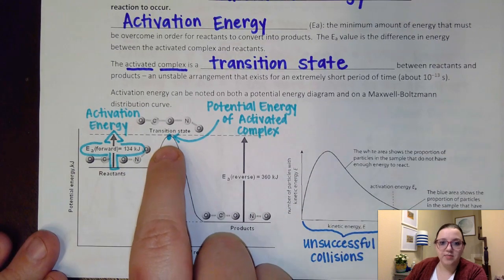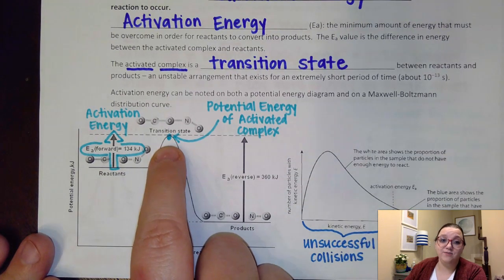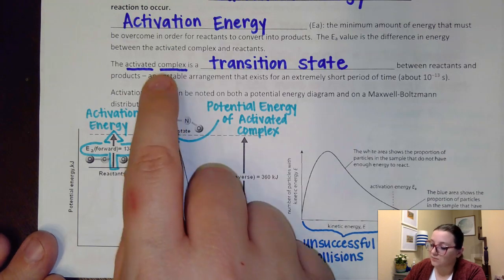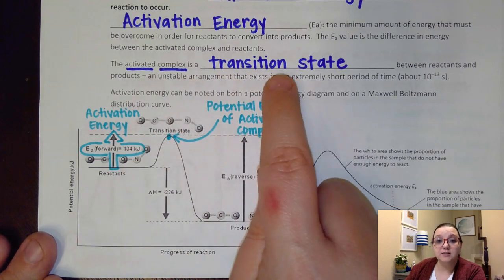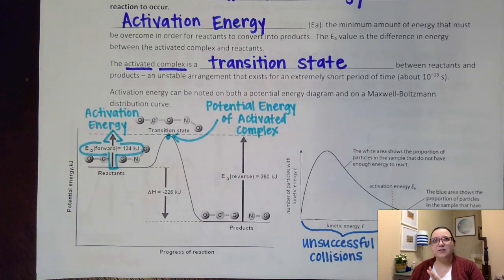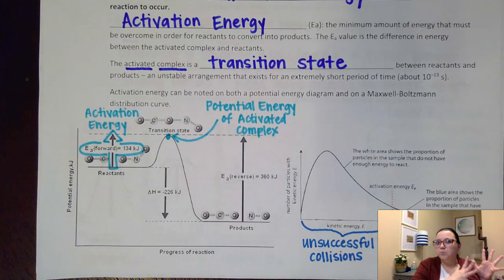Now up at the top of this we have what is called the activated complex, and the activated complex is sometimes called a transition state. It's basically kind of a temporary point where all the bonds have been broken from what we had originally but we haven't yet reformed them into a new configuration.